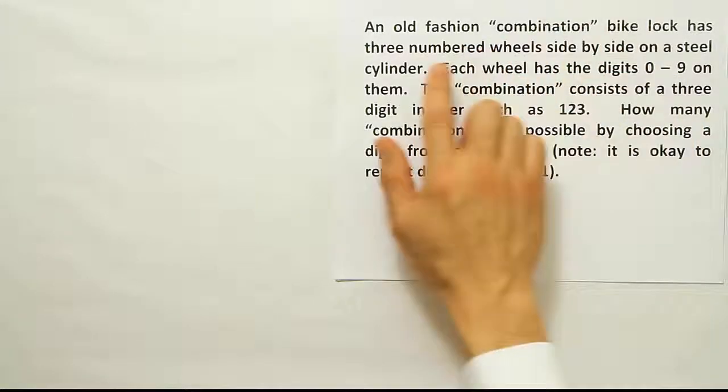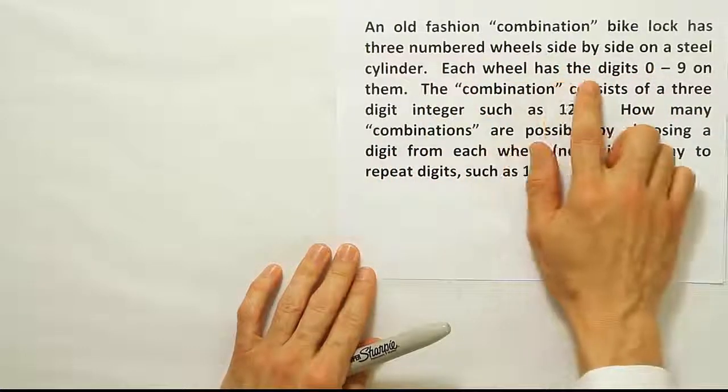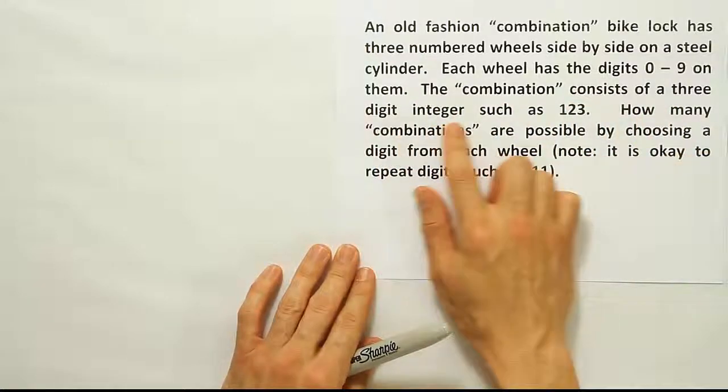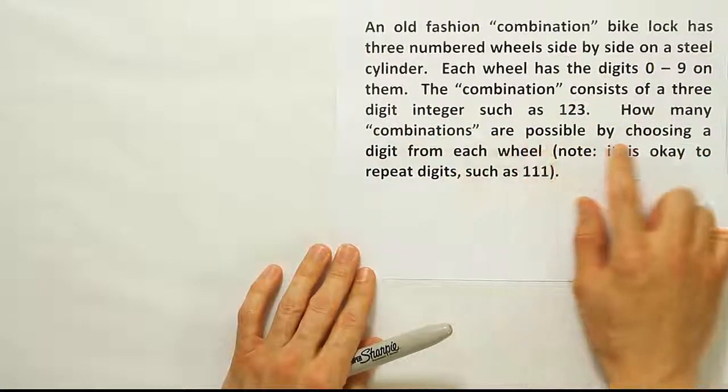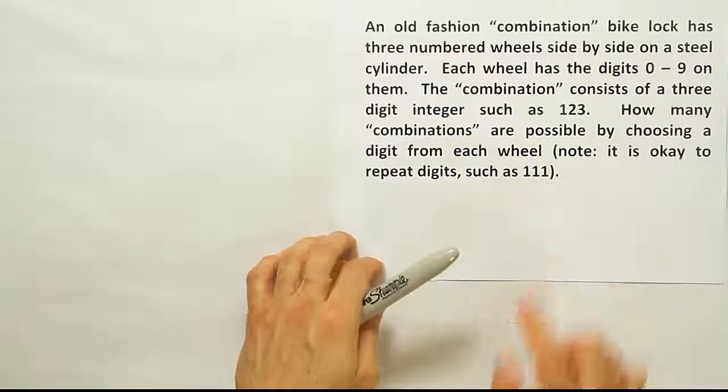An old-fashioned combination bike lock has three numbered wheels side by side on a steel cylinder. Each wheel has a digit 0 to 9 on them. The combination consists of a three-digit integer such as 1, 2, 3. How many combinations are possible by choosing a digit from each wheel? It is okay to repeat digits such as 1, 1, 1.